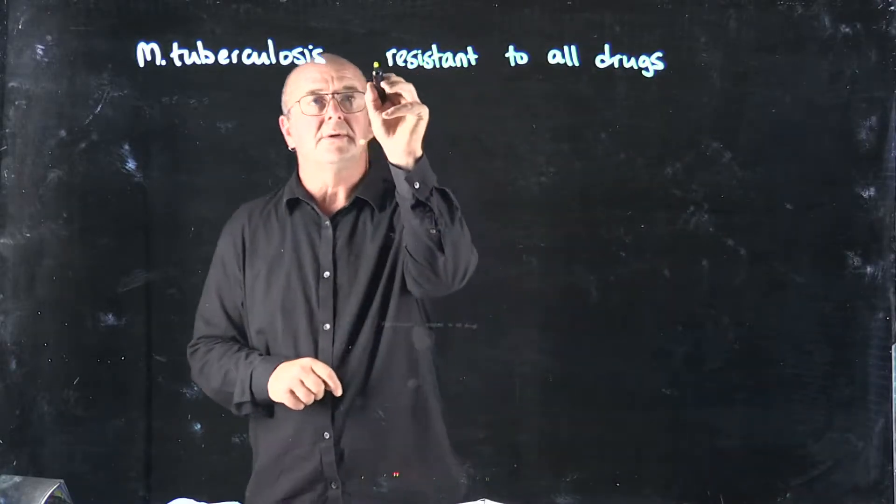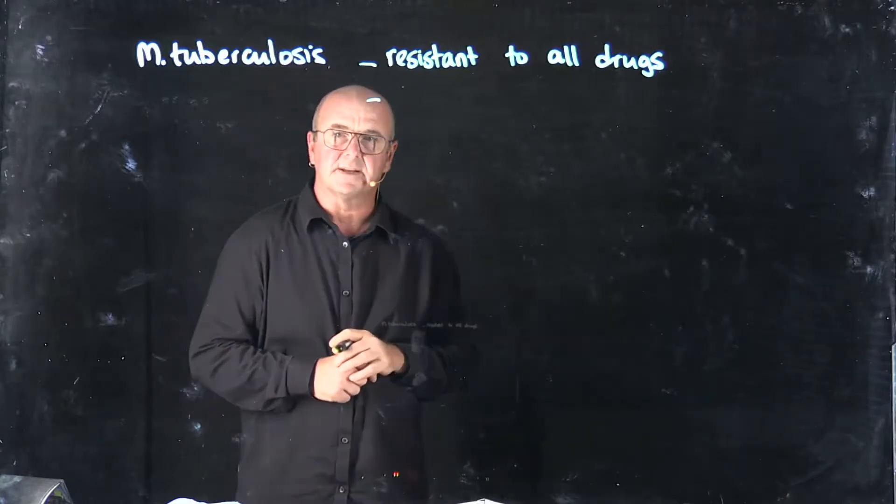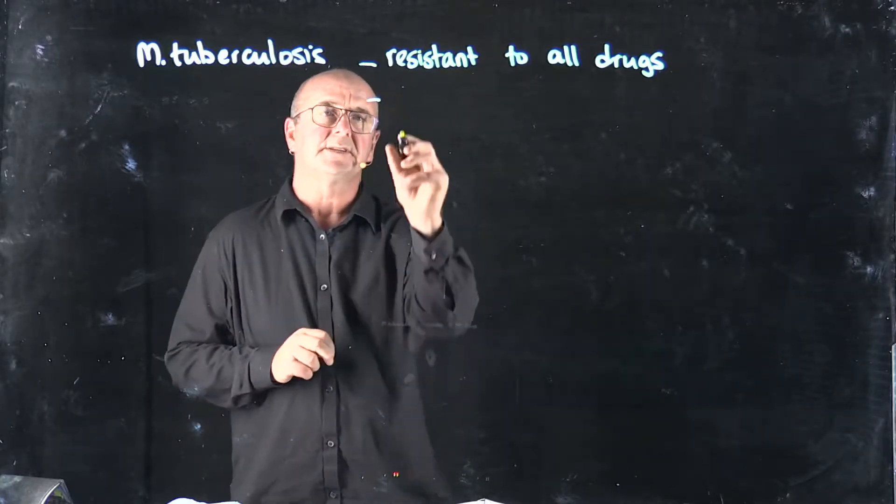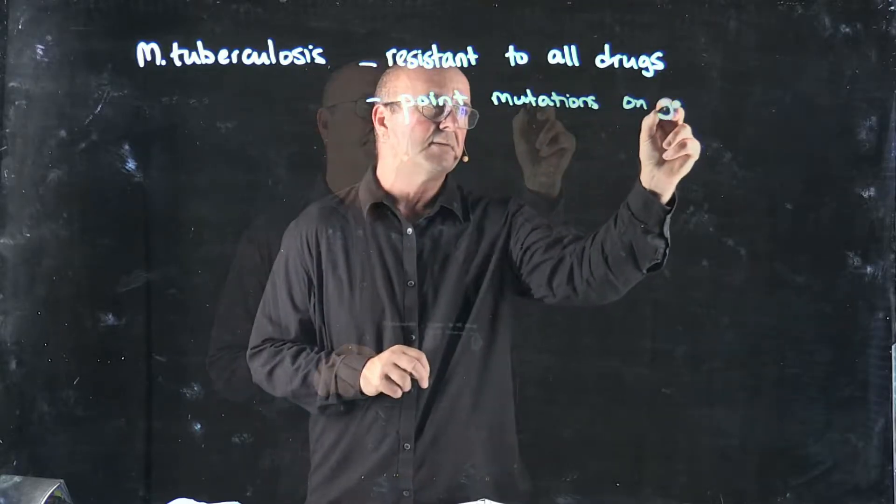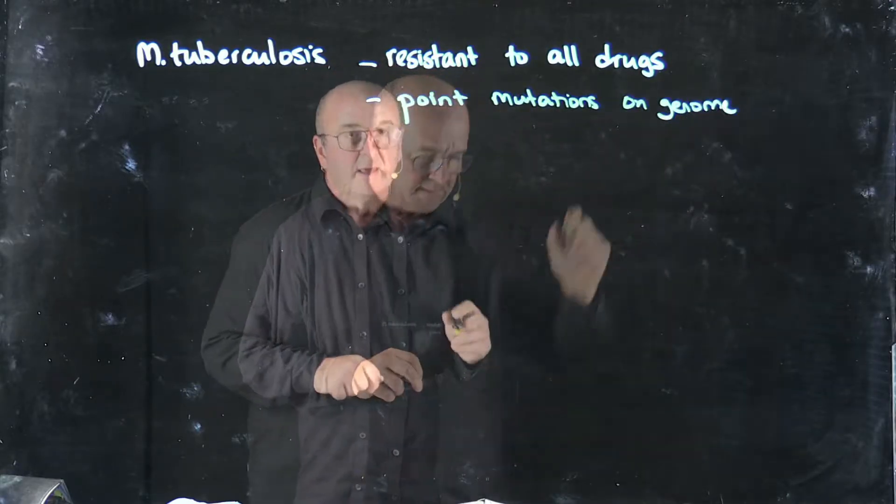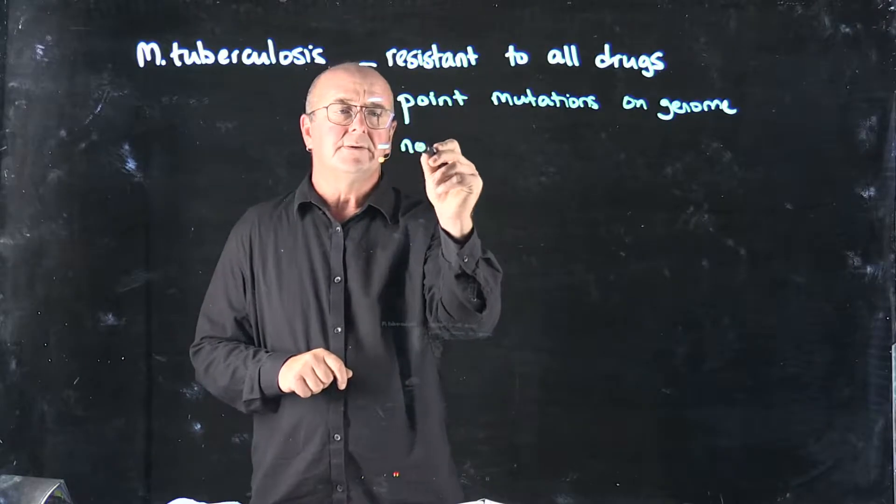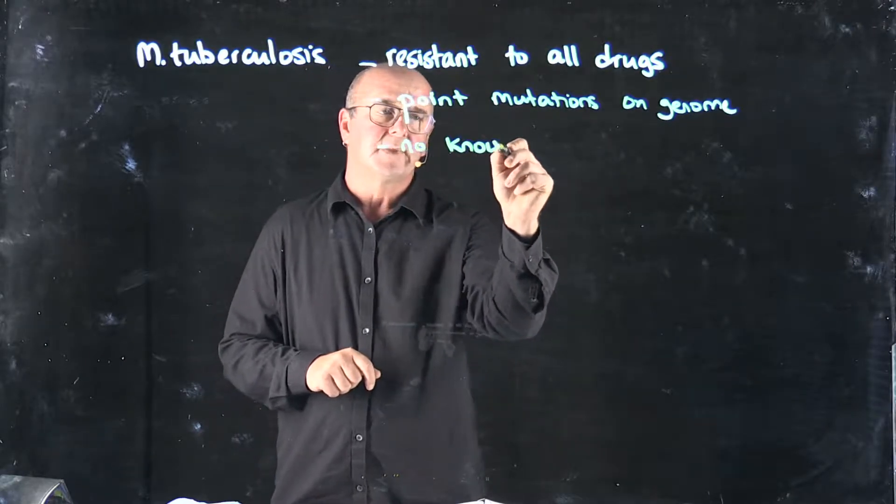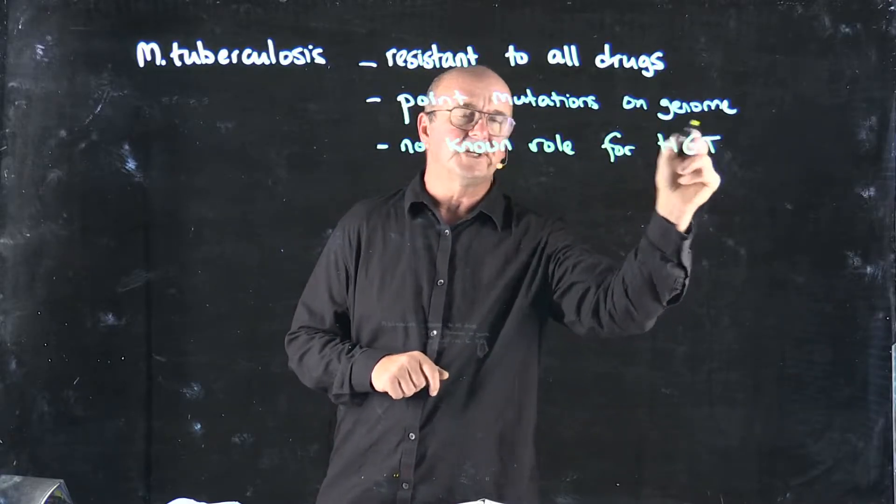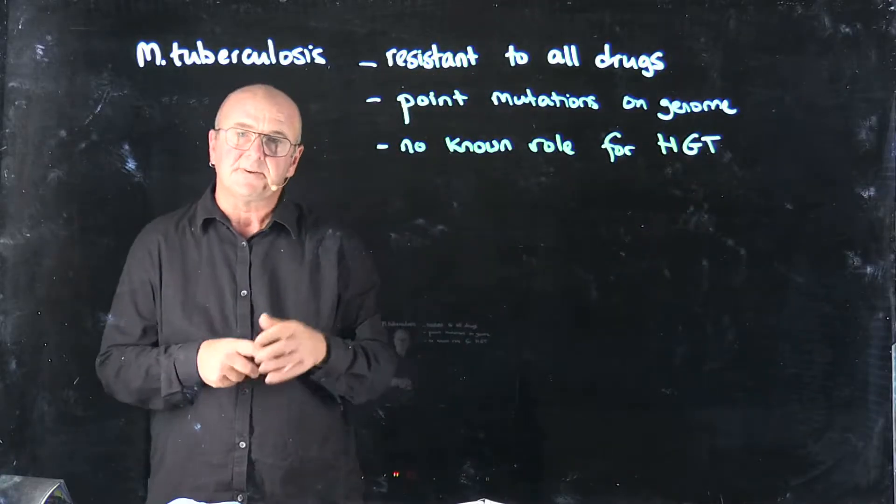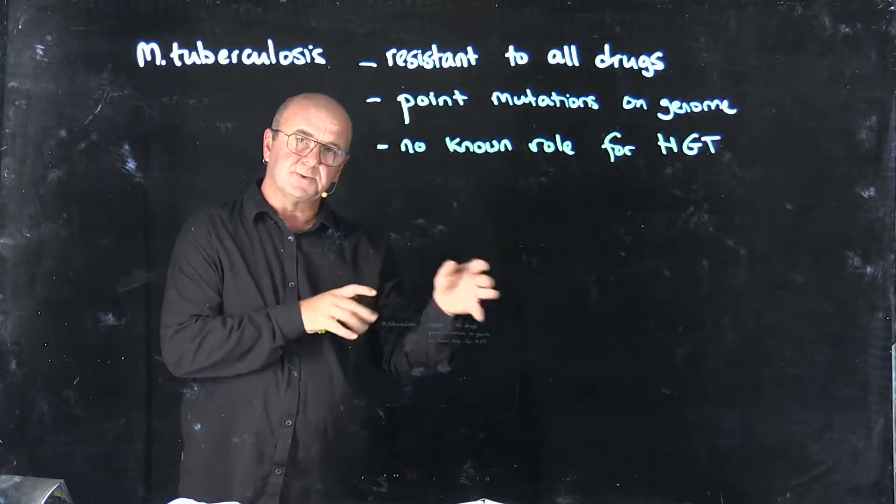And all of the resistance mechanisms for Mycobacterium tuberculosis are point mutations on the genome. And there's basically no known role for what's called horizontal gene transfer, the transfer of genes from one bacteria to another.